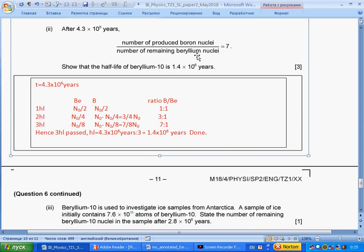After given time, the ratio boron to beryllium is seven. Show that the half-life is given value. I made a table: beryllium, boron. After one half-life, half of beryllium turns into boron. After two half-lives, we have only a quarter of beryllium, the rest is boron. The ratio is three to one. After three half-lives, the ratio is seven to one. So, seven corresponds to three half-lives. This time is three half-lives, so we divide by three and get the answer.